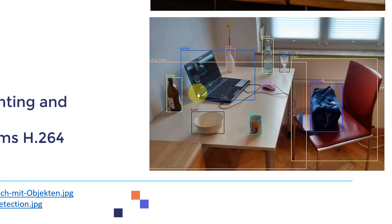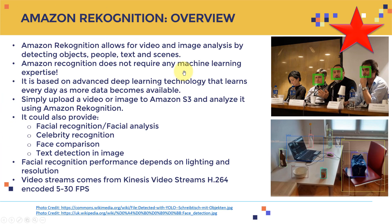It can tell you the class — this is a cup, this is a laptop — and it can also provide a confidence score, which is how confident the neural network is when it gives that prediction. It is based on advanced deep learning technology that learns every day as more data becomes available. Simply upload a video or image to Amazon S3 and analyze it using Amazon Rekognition.